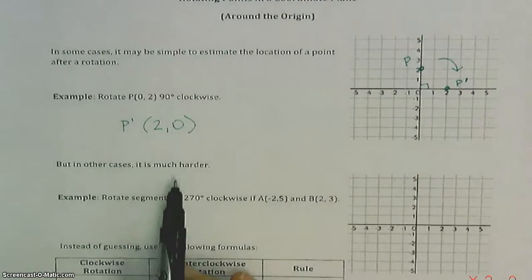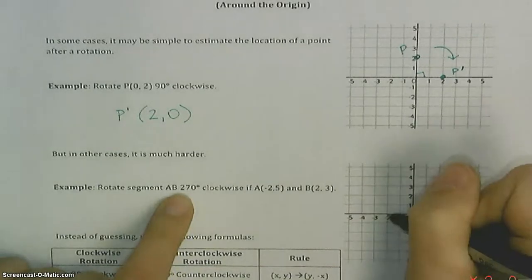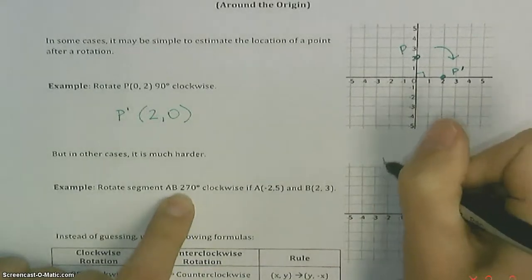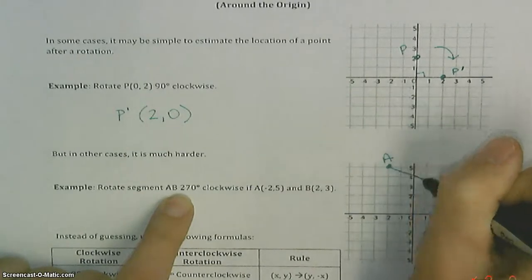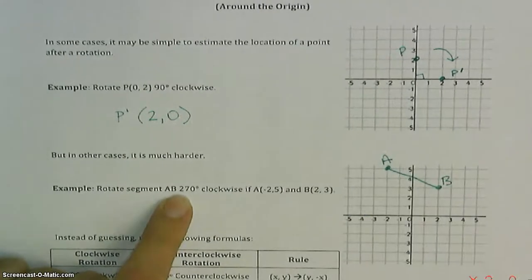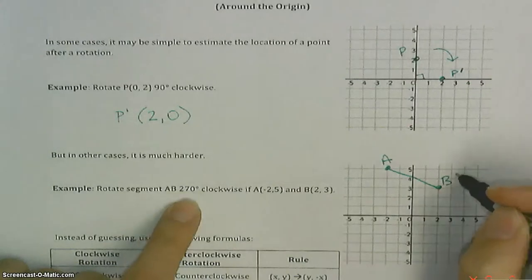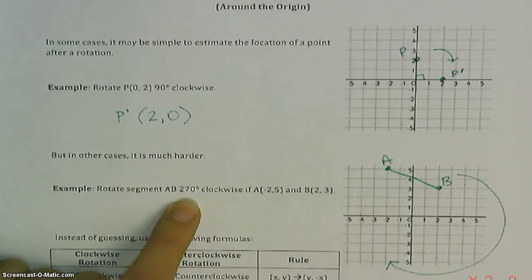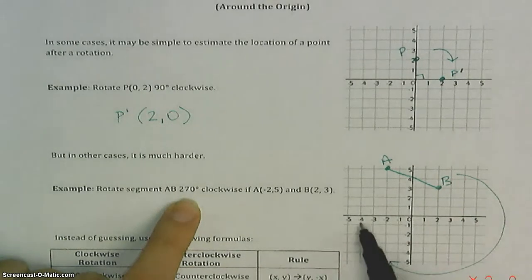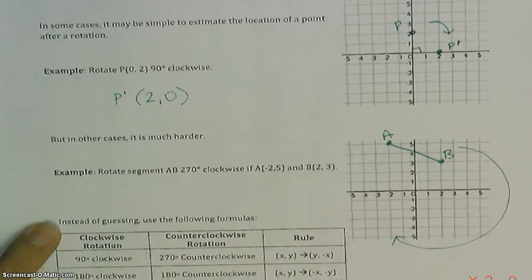But sometimes it gets a lot harder. Take segment AB — A is at (−2, 5), B is at (2, 3). We have to rotate it 270 degrees clockwise. Where's B going to end up? Instead of just guessing, we're going to use these formulas.